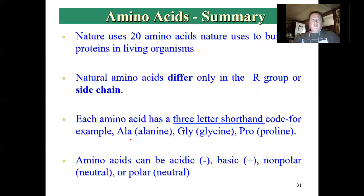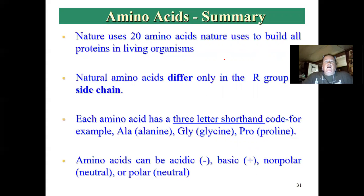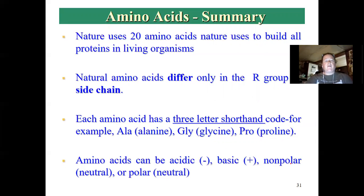To summarize: there are 20 amino acids that nature uses to build all proteins in living organisms. They are very similar to each other, each having an amino group, a carboxylic acid group, a hydrogen, and a side chain. They have three-letter shorthands and one-letter shorthands. We can categorize them as acidic (two), basic (two), nine non-polar hydrophobics, and polar hydrophilics, with the polar and non-polar being neutral.